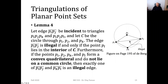We have four points, and with them we can have at most two triangles — this is a triangulation of a quadrilateral with four corners. Let's go through the Lemma.